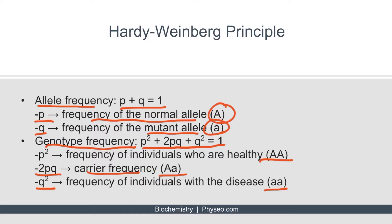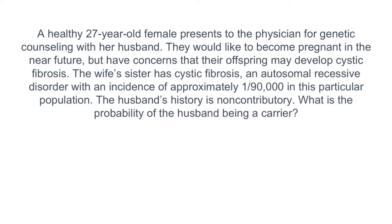The easiest way to understand this is probably by going through a couple of examples. A healthy 27-year-old female presents to the physician for genetic counseling with her husband. They would like to become pregnant but have concerns that their offspring may develop cystic fibrosis. The wife's sister has cystic fibrosis, an autosomal recessive disorder, with an incidence of approximately 1 in 90,000 in this particular population. The husband's history is non-contributory. What is the probability of the husband being a carrier?